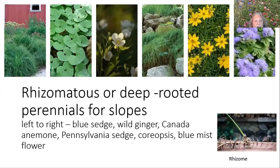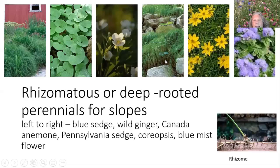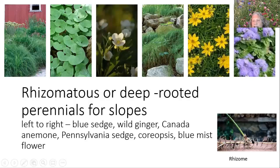Here are some rhizomatous perennials that are native. From left to right: blue sedge, and wild ginger — a great ground cover for shade. Canada anemone, Anemone canadensis, will grow in sun or shade and does a good job of filling in areas with a beautiful spring flower. Pennsylvania sedge can handle some sun but also looks grass-like — it does tend to flop over a bit in the shade, but when it flops you don't have to weed there. Coreopsis verticillata, threadleaf coreopsis, is another rhizomatous native perennial, and blue mist flower as well. This is what a rhizome looks like — each of these little nodes will sprout anew, forming that colony network on a slope.